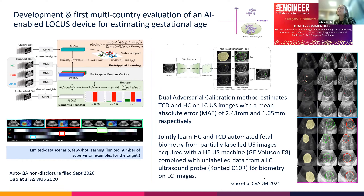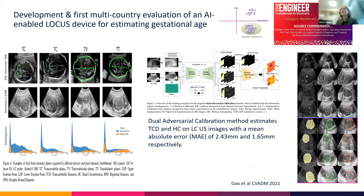We've developed an unsupervised method that combines high-end ultrasound machine data with low-cost probe data to estimate these measurements from very low-quality images. The errors compared to ground truth are on the order of 2.5, 4, and 1.6 millimeters — quite small and encouraging results, purely based on a low-cost solution.